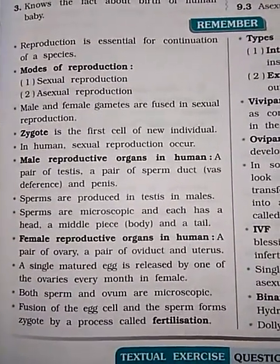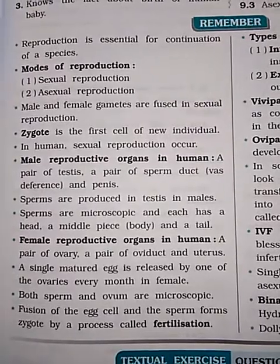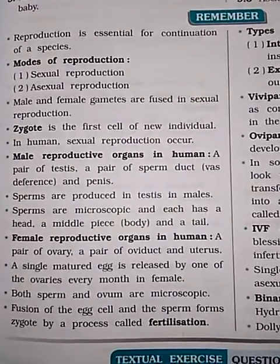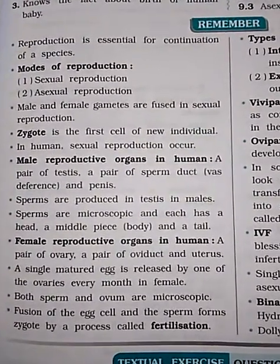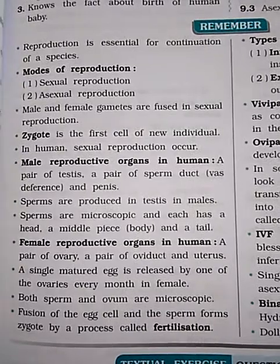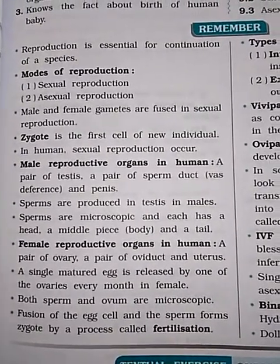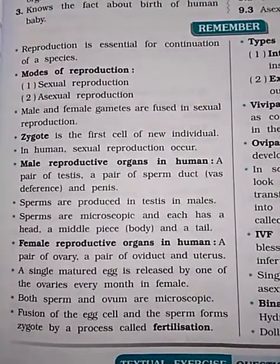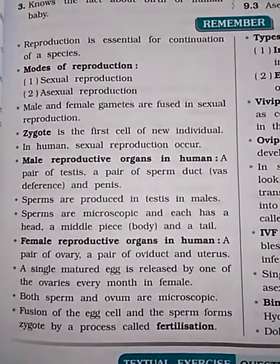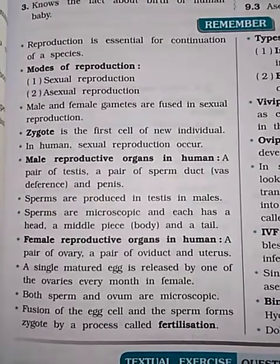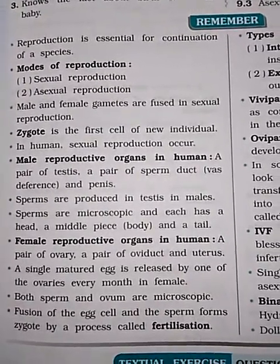In sexual reproduction, male and female gametes are fused. Zygote is the first cell of a new individual.